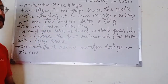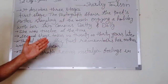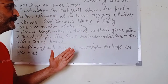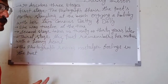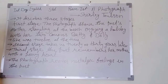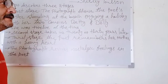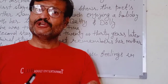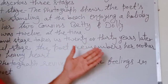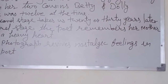This indicates that when the poetess was not yet born, the photograph or snapshot was taken by her uncle. The second stage takes us twenty or thirty years later — this gives the indication that the photograph was taken about twenty or thirty years before. The third stage is the poet remembering her mother with a heavy heart — she was in a sad mood when she looked at the photograph hanging on the wall. The photograph revives nostalgic feelings in the poet.